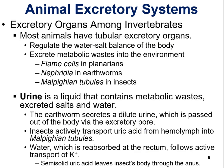Talking about excretory organs in invertebrates: most animals have tubular excretory organs. Their function is to regulate water-salt balance and excrete metabolic waste into the environment. Examples include flame cells in planarians, nephridia in earthworms, and Malpighian tubules in insects. These are all excretory organs in different types of invertebrates serving that same main function.